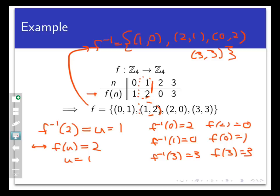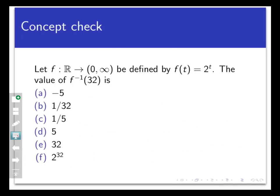Let's see how well you're understanding this fairly tricky idea with a concept check. Let f be a function that goes from the real numbers into the open interval from 0 to infinity. Remember this is the set of all positive real numbers. We're going to define this function f by f of t equals 2 to the t power. You can check that f actually is a bijection, so f inverse is a function that goes the opposite direction from the open interval 0 to infinity to R. What is the value of f inverse of 32? Here's a list of values, and pause the video and make your selection.